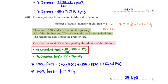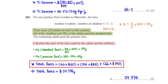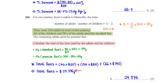The number of adults who paid the standard fare is 70% of 220, which is 154. Subtracting 154 from 220 gives 66 adults who paid the premium fare. All 40 children paid the standard fare. So the total cost is 40 × $60 + 154 × $84 + 66 × $140, which equals $24,576.